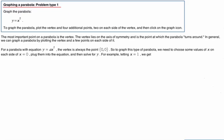Graphing a Parabola Problem Type 1. So we're going to graph this parabola. It's a very simple one, y equals x squared. We're going to get a feel for what a parabola is like and how we graph that. We're going to plot the vertex and four additional points, so we've got to have at least five points.